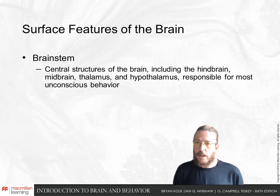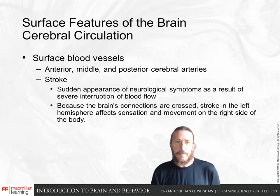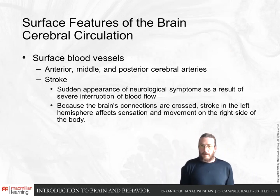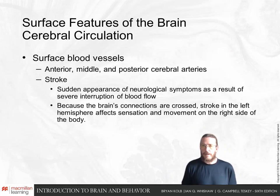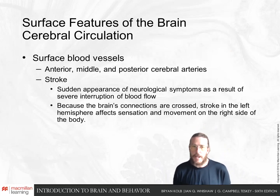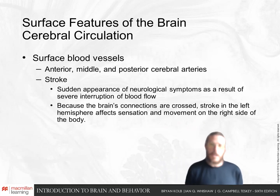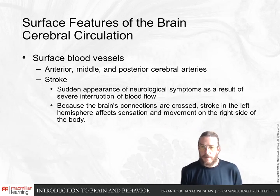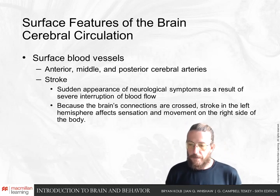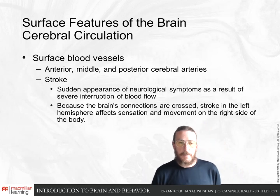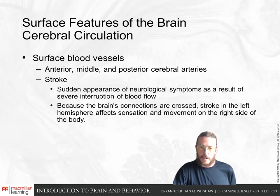Our brain, like the rest of our body, is supplied with blood from our lungs filled with oxygen and nutrients. Blood flows into our brain through three major arteries: the anterior, middle, and posterior. A stroke is the sudden appearance of symptoms following an interruption of blood flow through one of these arteries. A stroke on the left side of the brain will affect activity on the right side of the body and vice versa. Stroke needs quick treatment and you should learn its signs.